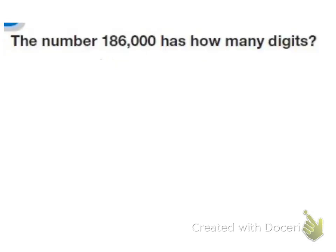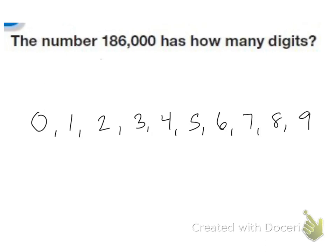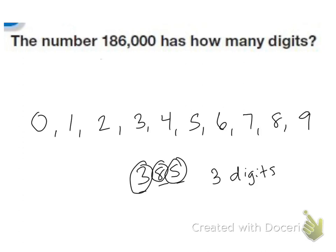The next topic is digits. There are ten digits in our number system — they go from zero to nine. A number like 385 has three digits. We would say the last digit is five, the middle digit is eight, and the first digit is three. The number 186,000 has how many digits? We count: one, two, three, four, five, six — so it has six digits.